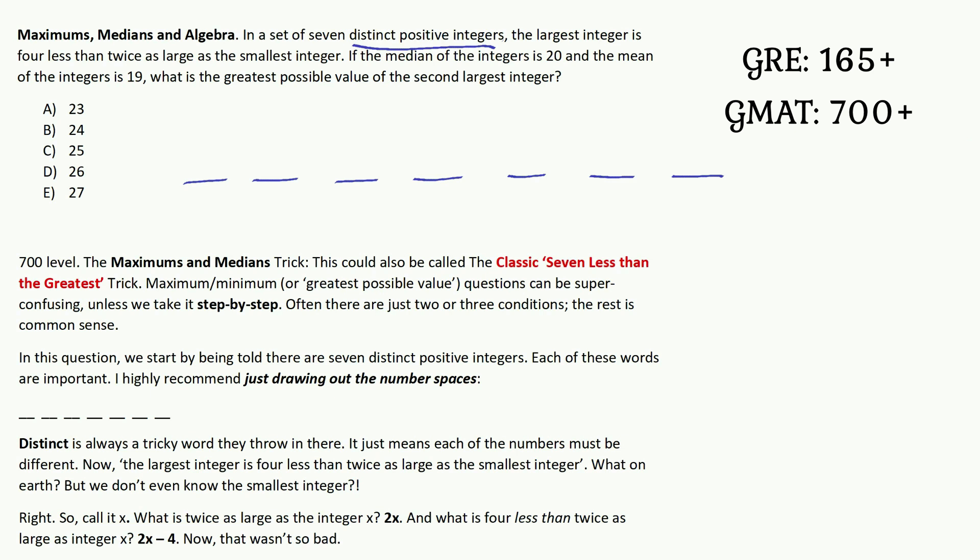What about the next set of words? The largest integer is four less than twice as large as the smallest integer. Wow, that is confusing. We don't even know the smallest integer. What we're going to do here, to help our brains capture what's going on, we're going to pick the smaller of the two terms described here and give it a letter.